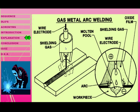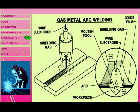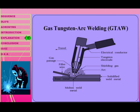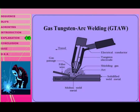In Gas Metal Arc Welding, the wire electrode performs the welding and shielding gas is available inside the core. When utilized, it produces a sufficient arc which is used for the welding process.